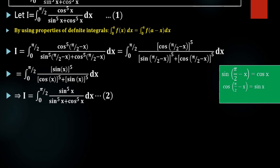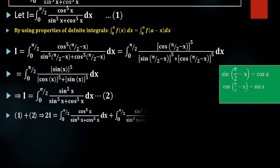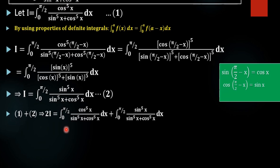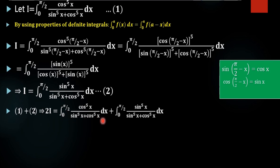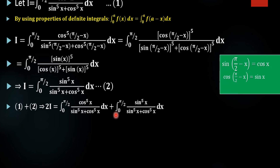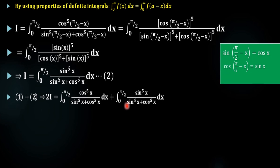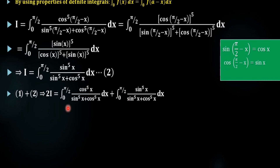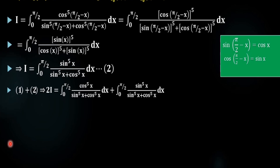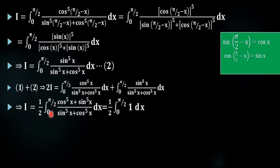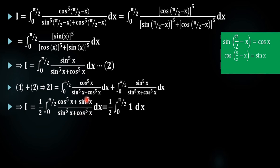In the next step we are adding equations 1 and 2, then we will get i plus i which is equal to 2i. On the right-hand side we get the integral from 0 to π/2 of cos⁵x divided by (sin⁵x plus cos⁵x) dx, plus the integral from 0 to π/2 of sin⁵x divided by (sin⁵x plus cos⁵x) dx. Taking the common integral outside, the denominator is the same, so we take sin⁵x plus cos⁵x as the common denominator.